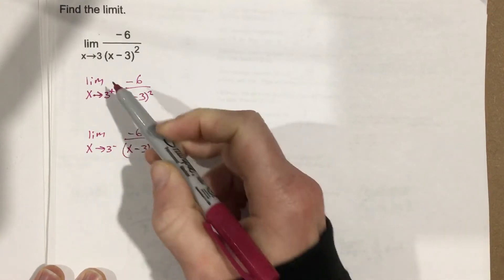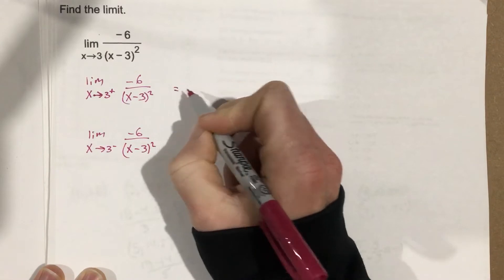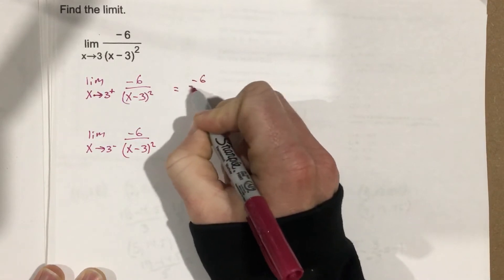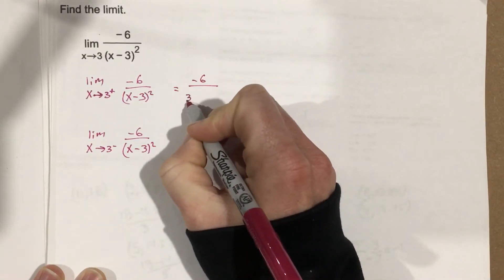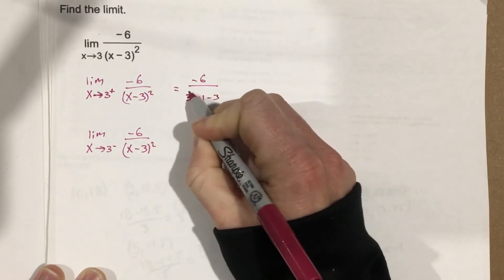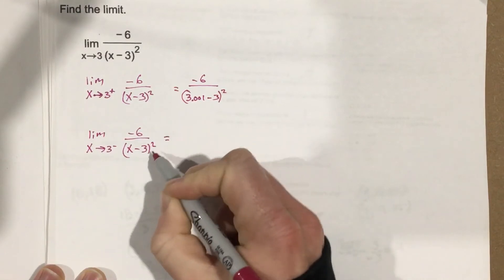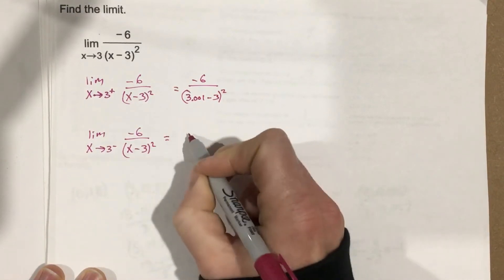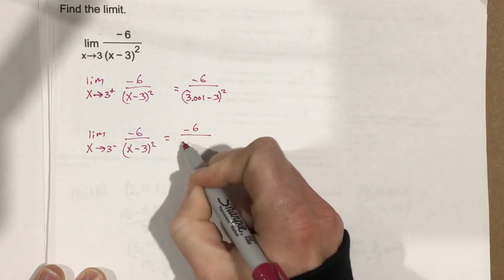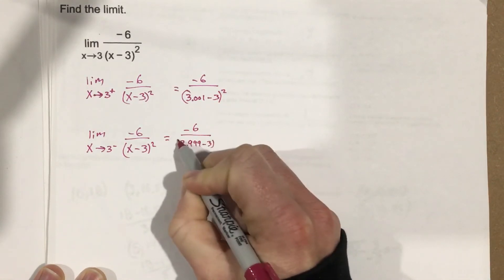As I approach 3 from the right, I'm going to plug in negative 6 over (3.001 minus 3) squared. And from the left, I'm going to plug in negative 6 over (2.999 minus 3) squared.